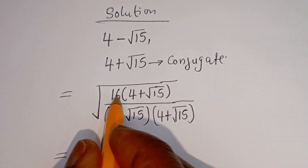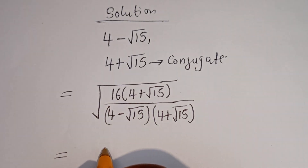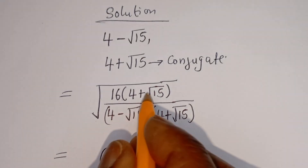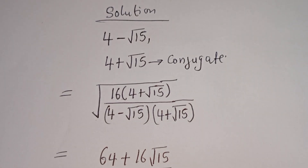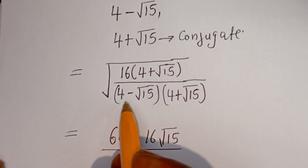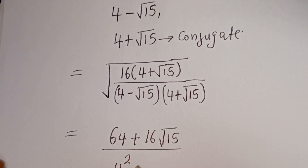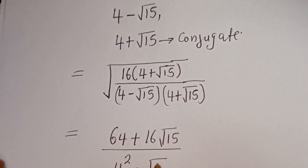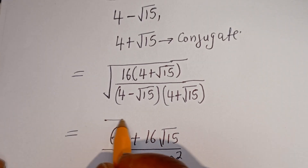This equals 16 multiplied by 4, which is 64, plus 16 multiplied by root 15, which is 16 root 15, divided by the denominator. The denominator is 4 squared minus square root of 15 squared.